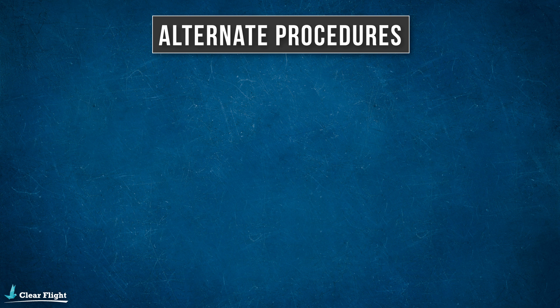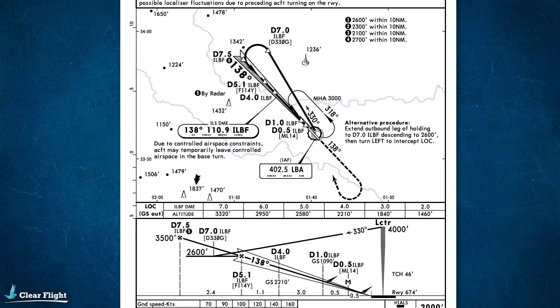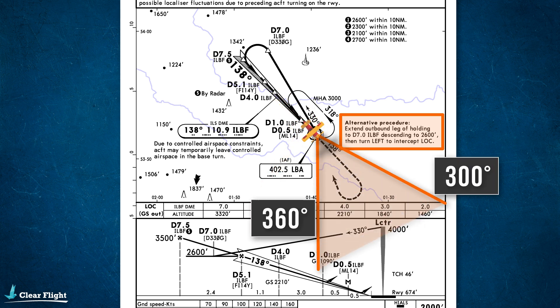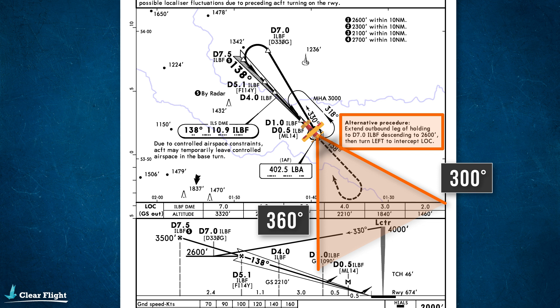Some approaches include an alternate procedure, which might be your only option at certain times. For example, this ILS approach at Leeds airport in the UK has an alternate procedure that you can fly from the hold. Taking a closer look, the inbound leg of the hold is 138 degrees, and the outbound track for the procedural approach is 330 degrees. So if you're already in the hold tracking inbound on 138 degrees, you're well outside the 60 degree cone from which you can commence the procedural approach. There's no procedural turn to transition from the hold to the outbound leg, so in this case the only way to fly a procedural approach from the hold is by flying the alternate procedure.